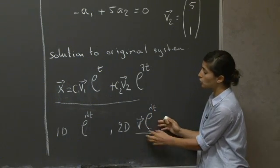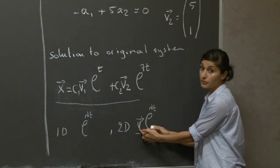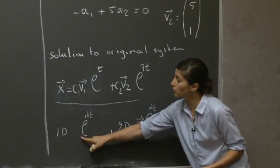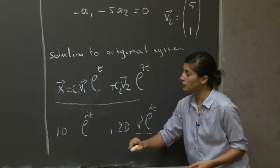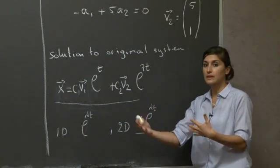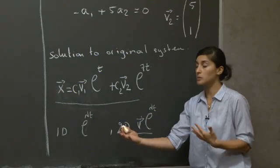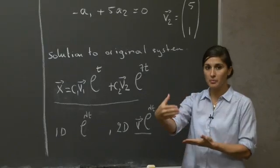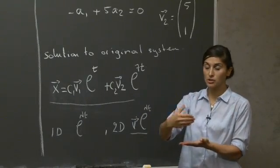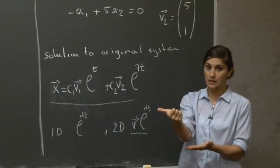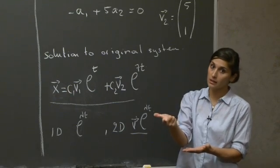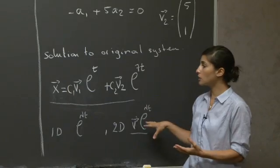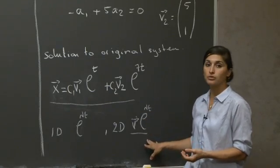And then, basically, we just solved for the lambdas and solved for the v's and did a linear combination of all those solutions, like we did before. In the 1D case, we solved for all the lambdas. We had different values of lambda and we did a linear combination of those exponentials. So that ends this problem. And here, the key is just to go through the method of diagonalizing your matrix. Basically, it's finding the eigenvalues and then computing the eigenvectors associated with that and writing your solutions in terms of a linear combination of the solutions that you found.